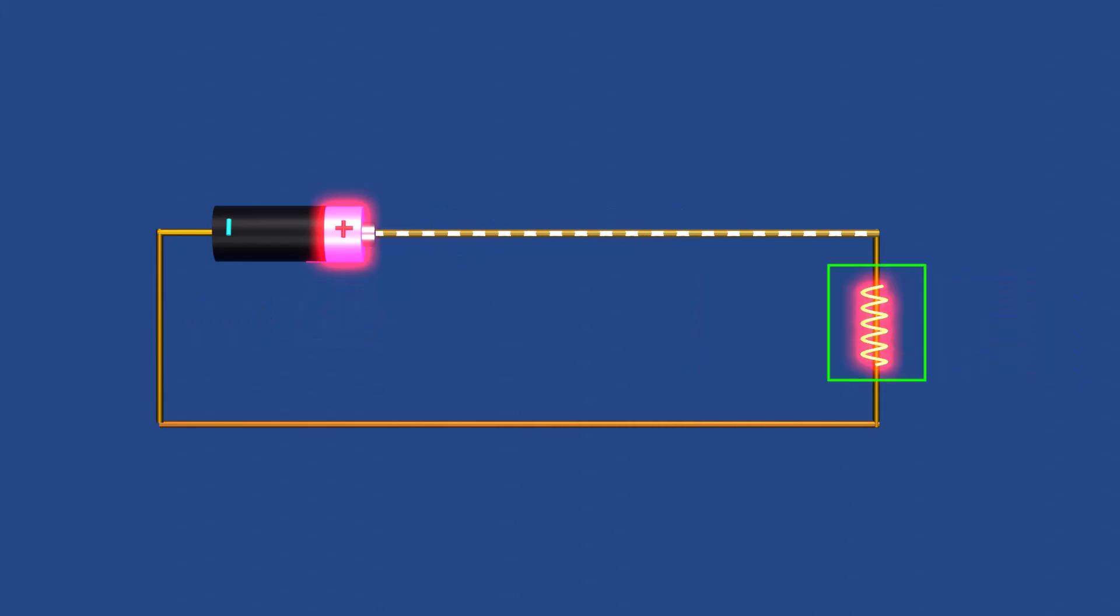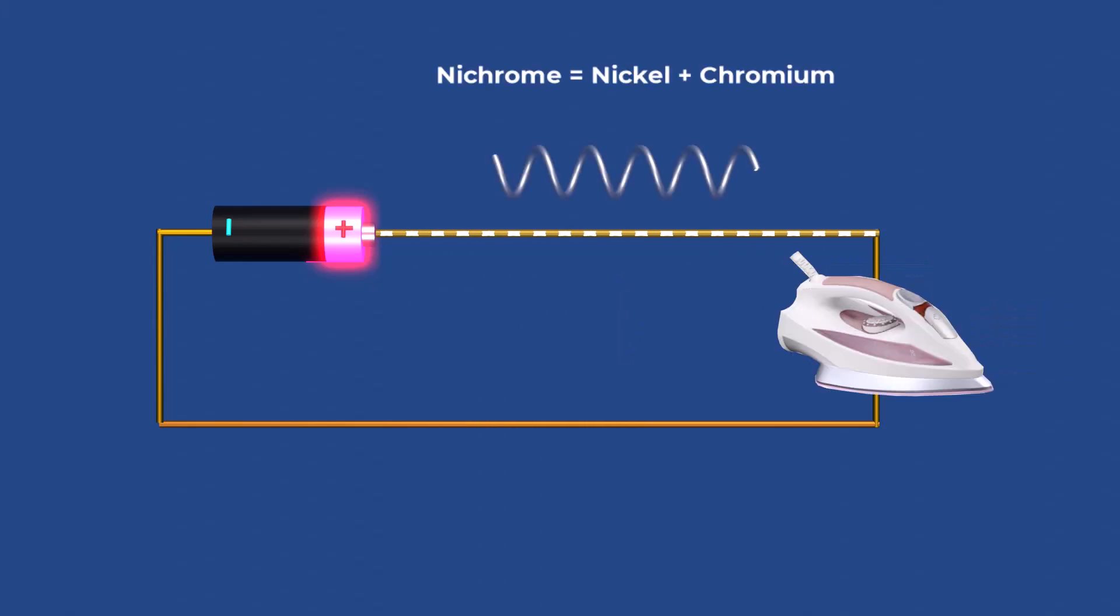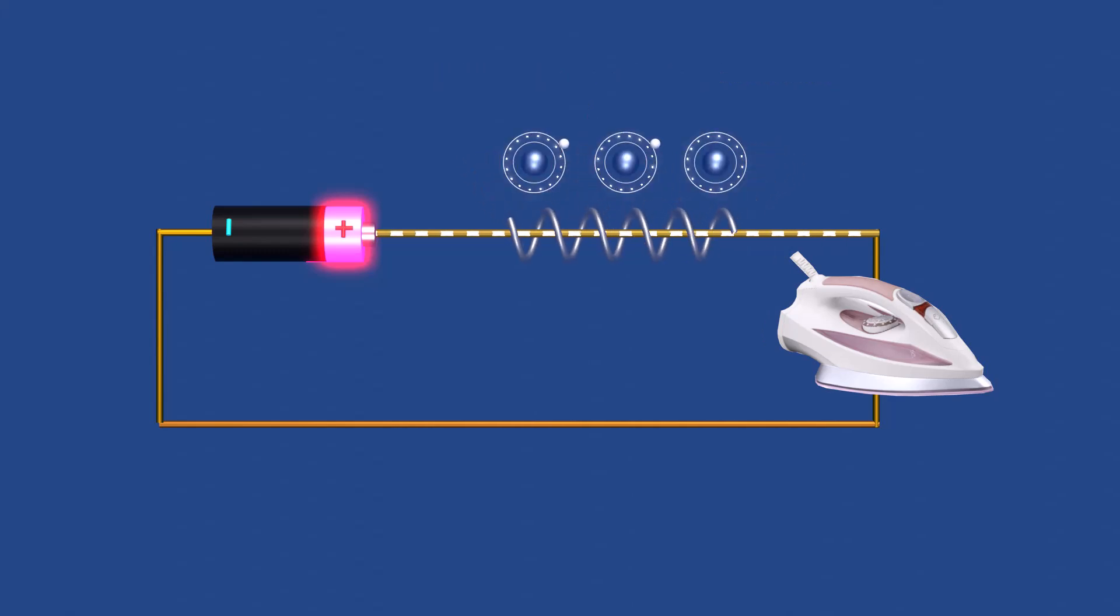For example, heating elements in devices like heaters and irons are made from nichrome, which has a specific resistance based on its size. As current passes through the element, the collisions between electrons and atoms release energy in the form of heat.